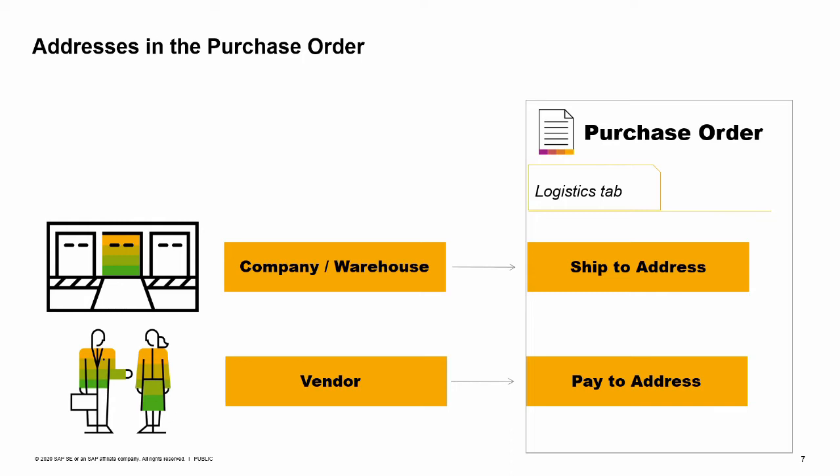For service rows, no warehouse is selected. Therefore, the company ship to address will always default into service type purchasing documents. The other important address in the purchase order is the pay to address. The pay to address is displayed under the Logistics tab and defaults from the vendor business partner master data record. Always make sure the pay to address is the correct one for a given purchase, since this information prints on the check when payment is issued. Addresses can be overwritten inside a purchasing document as needed.